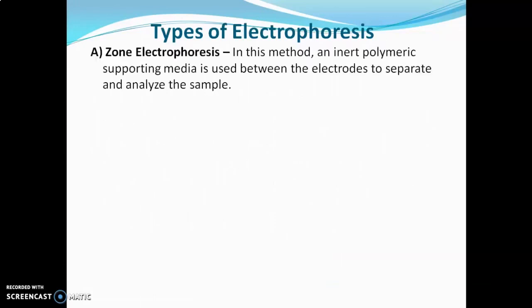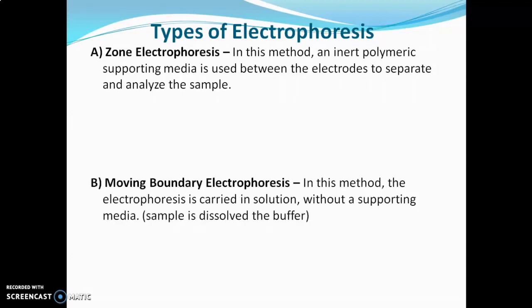There are mainly two types of electrophoresis. The first is zone electrophoresis, where an inert polymeric support medium is used between the electrodes to separate the analyte. The second is moving boundary electrophoresis, where the electrophoresis is carried out in a solution without a support medium — it is carried out in buffer solution.